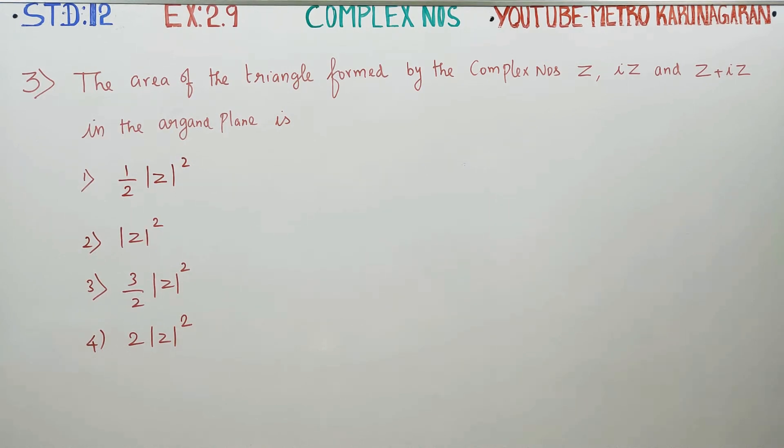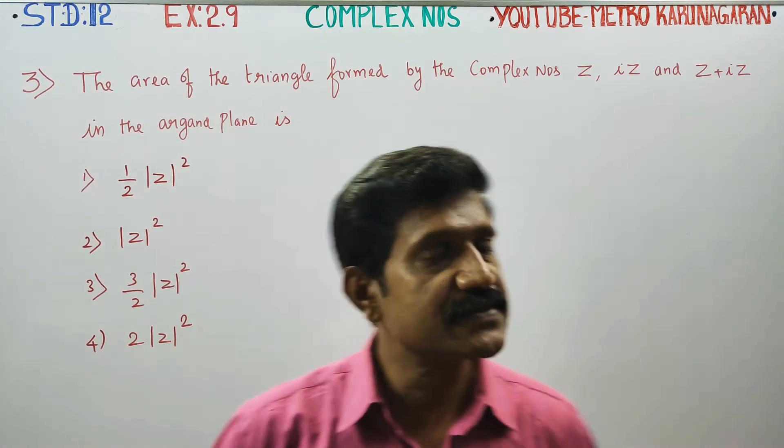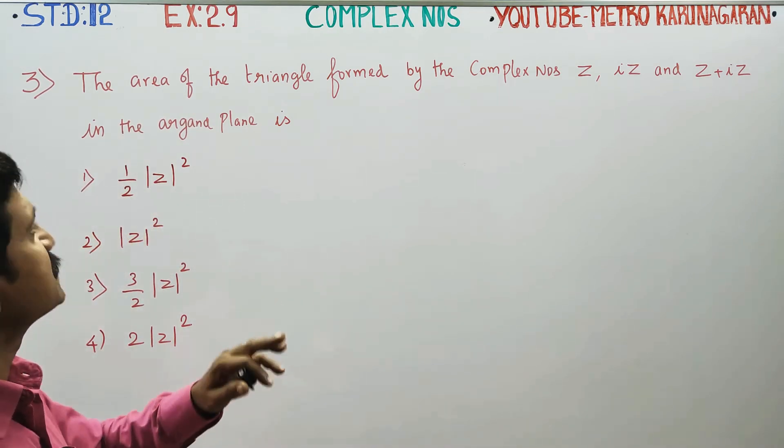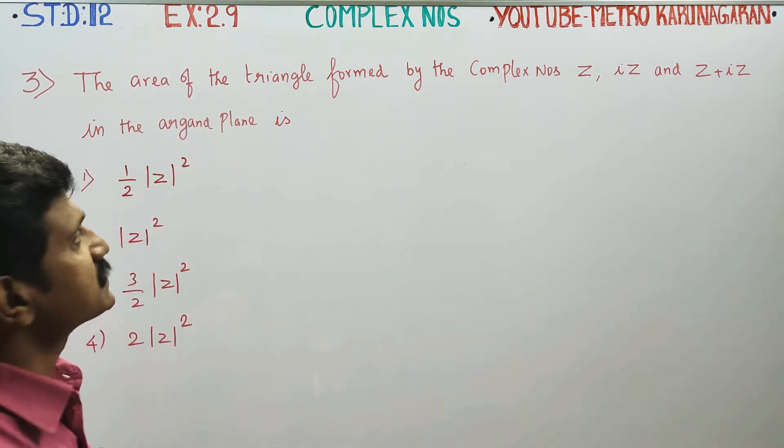Dear 12 standard students, in exercise number 2.9, sum number 3, the area of the triangle formed by the complex numbers Z, IZ and Z plus IZ in the argand plane is